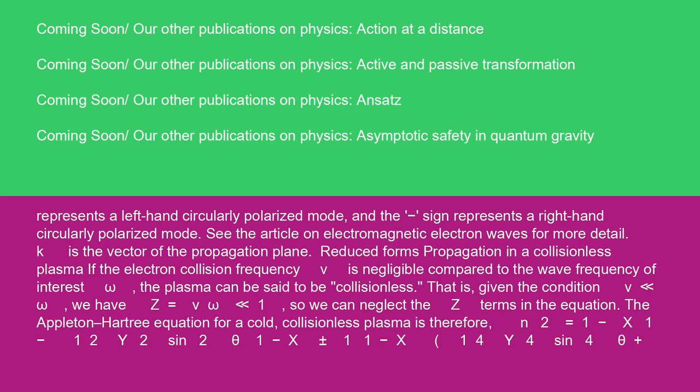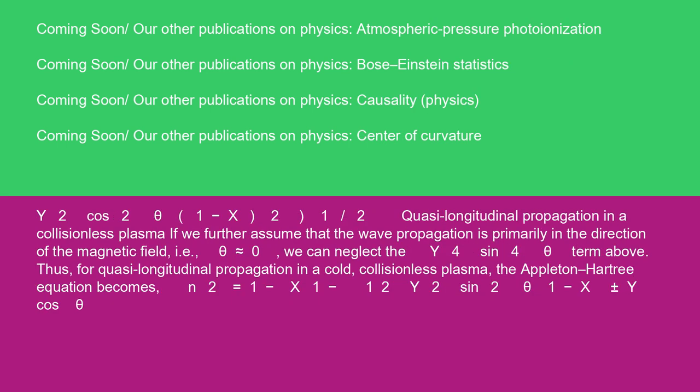Reduced forms: Propagation in a collisionless plasma. If the electron collision frequency ν is negligible compared to the wave frequency of interest ω, the plasma can be said to be collisionless. That is, given the condition ν ≪ ω, we have z = ν/ω ≪ 1, so we can neglect the z terms in the equation. The Appleton-Hartree equation for a cold, collisionless plasma is therefore: n² = (1 - x) / (1 - (1/2)y² sin²θ / (1 - x) ± [(1 / (1 - x)) ((1/4)y⁴ sin⁴θ + y² cos²θ (1 - x)²)]^(1/2)).